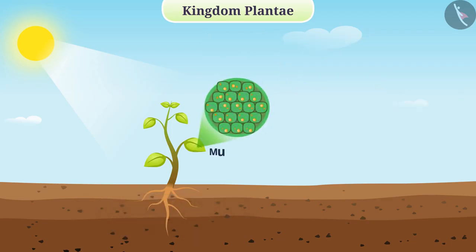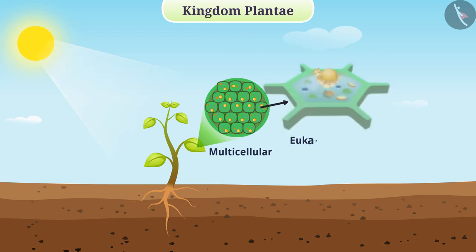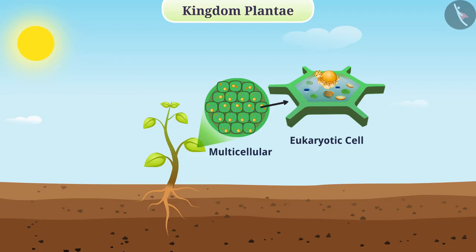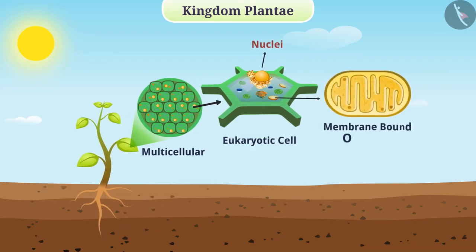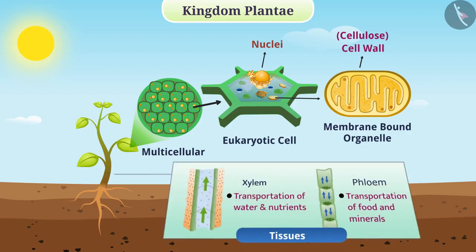Plants are all multicellular organisms formed from eukaryotic cells — that is, they have well-defined nuclei and membrane-bound organelles. They contain cell walls which are mainly made up of cellulose. Different functions in their body are performed by tissues.